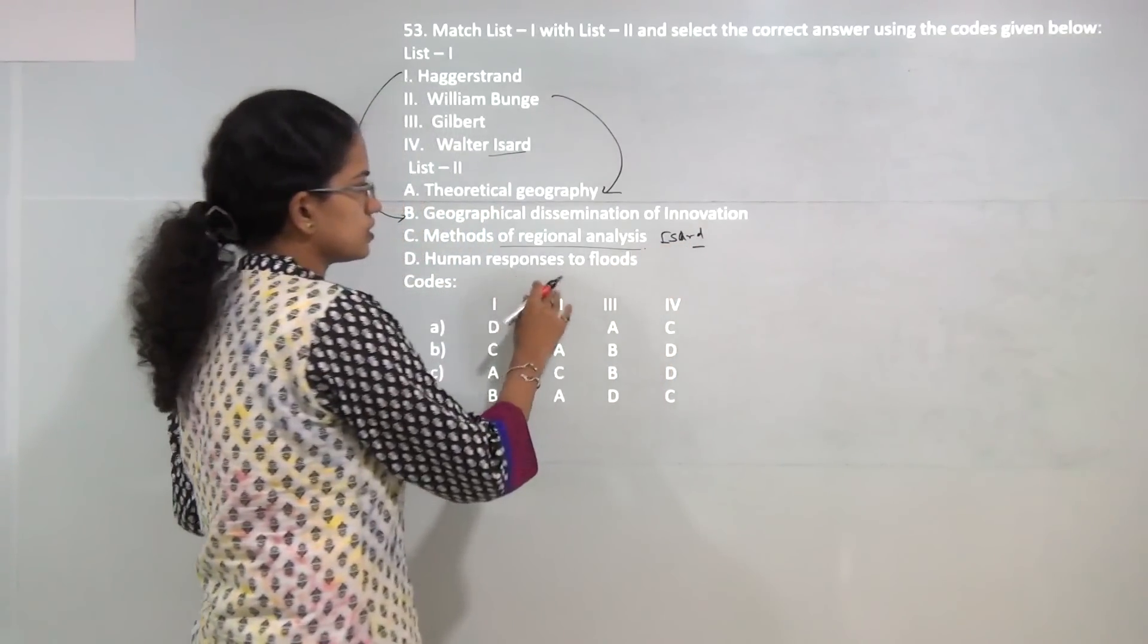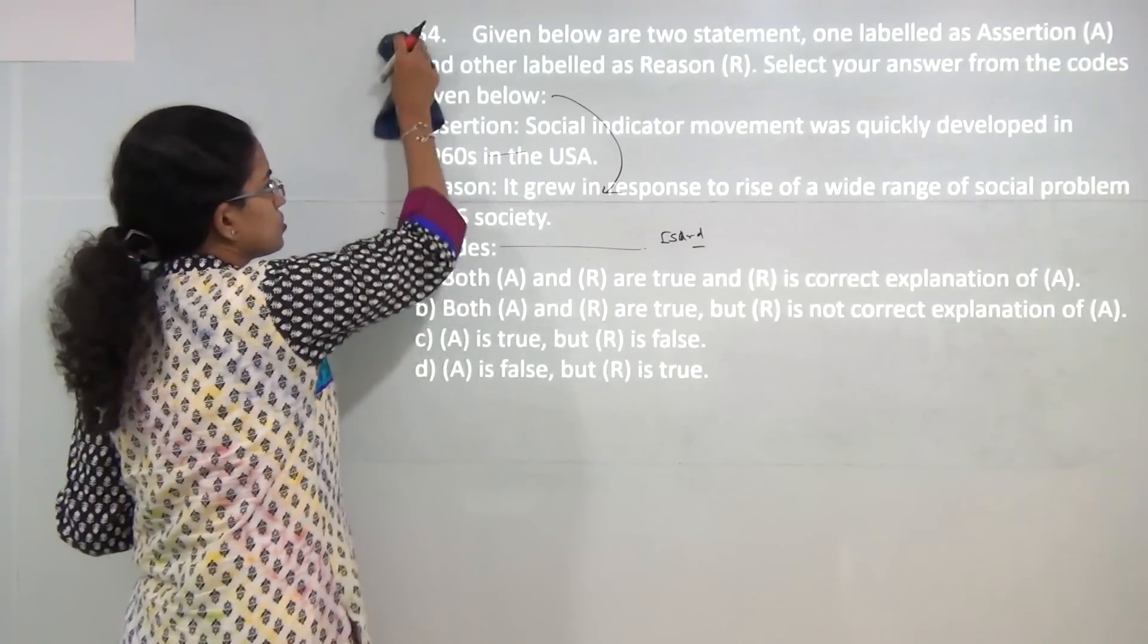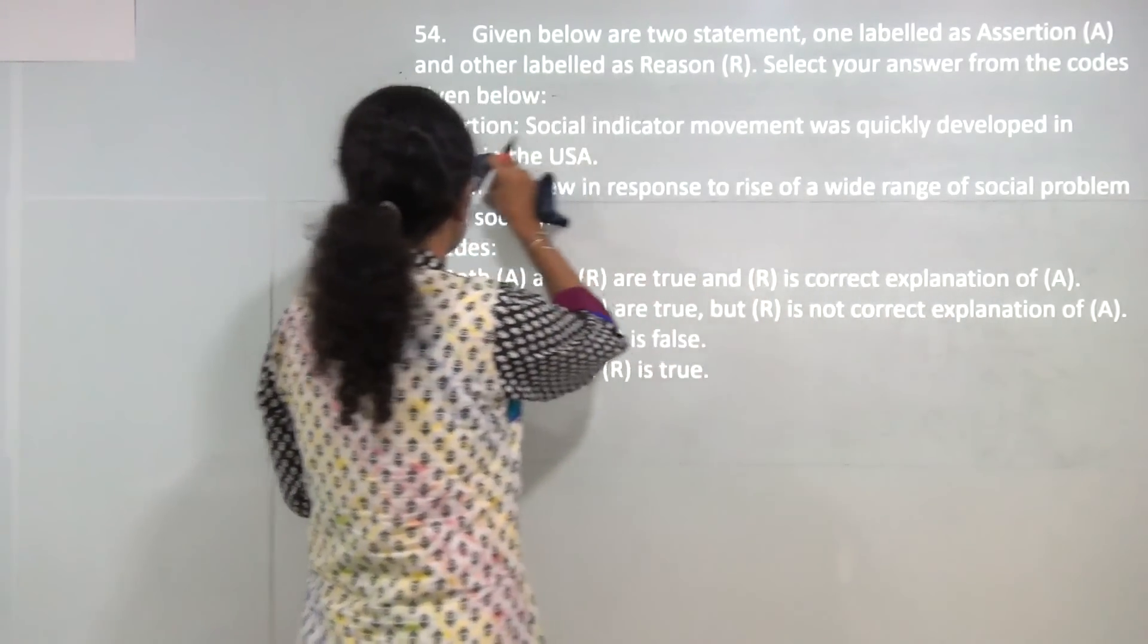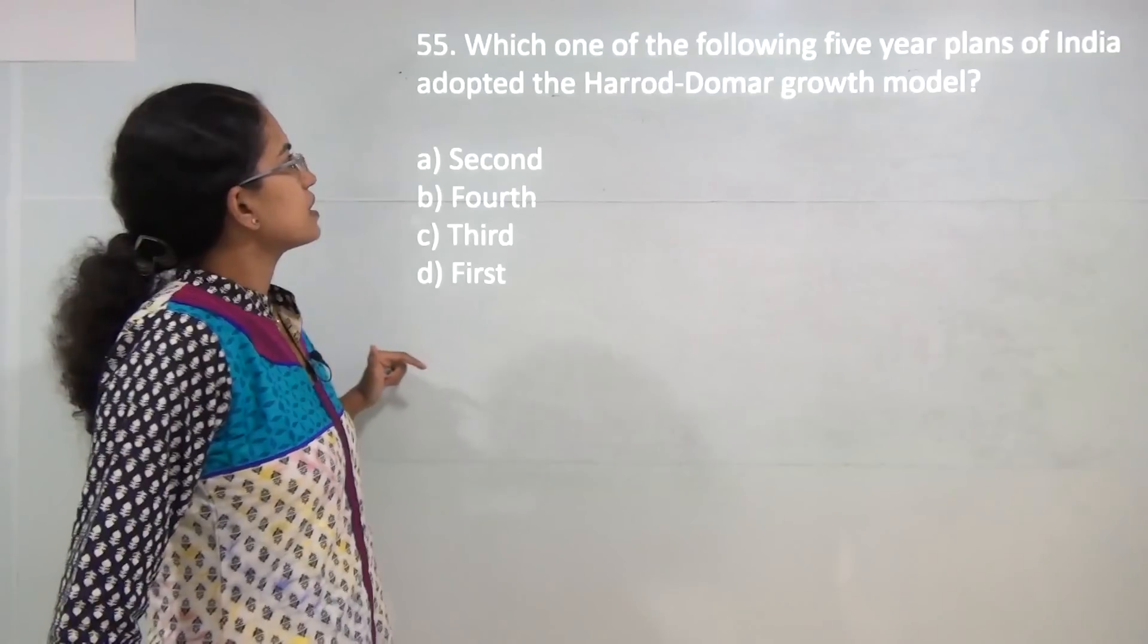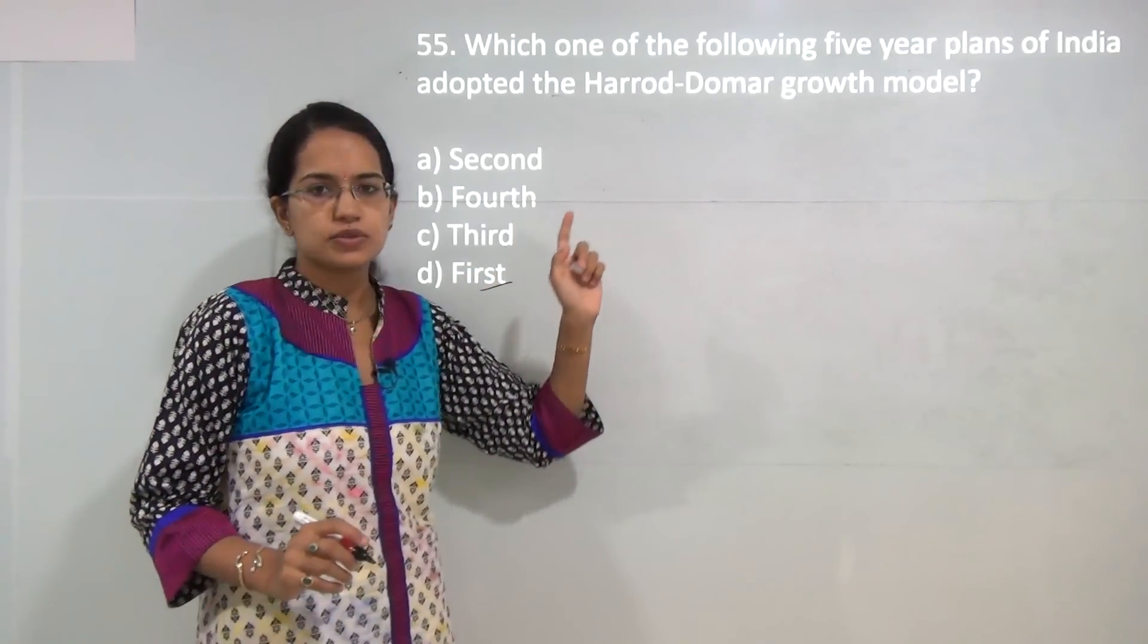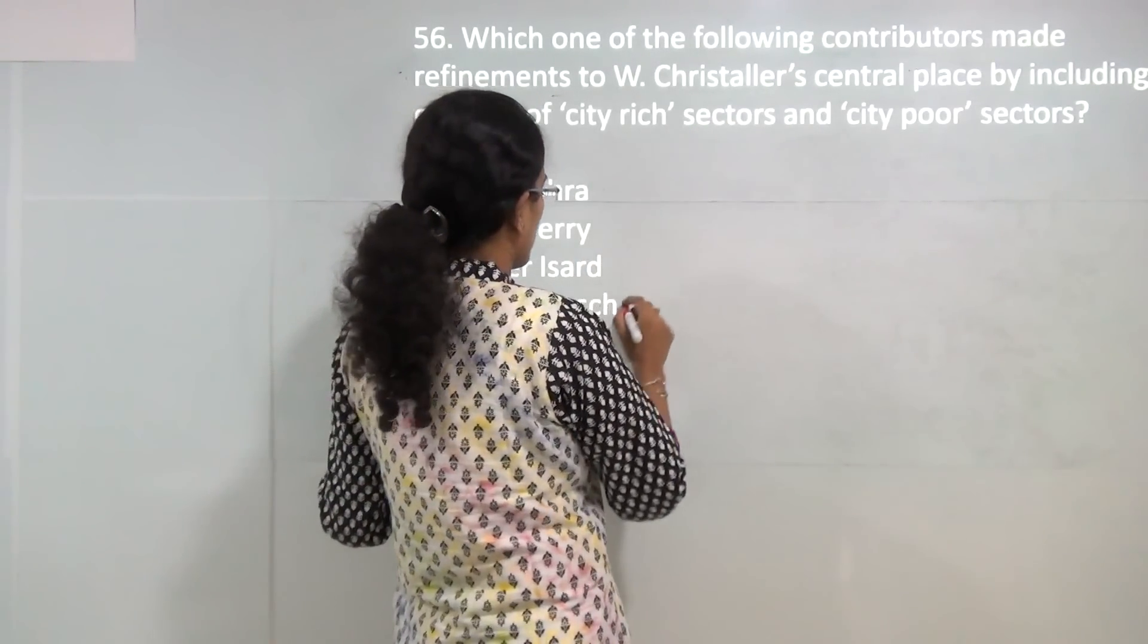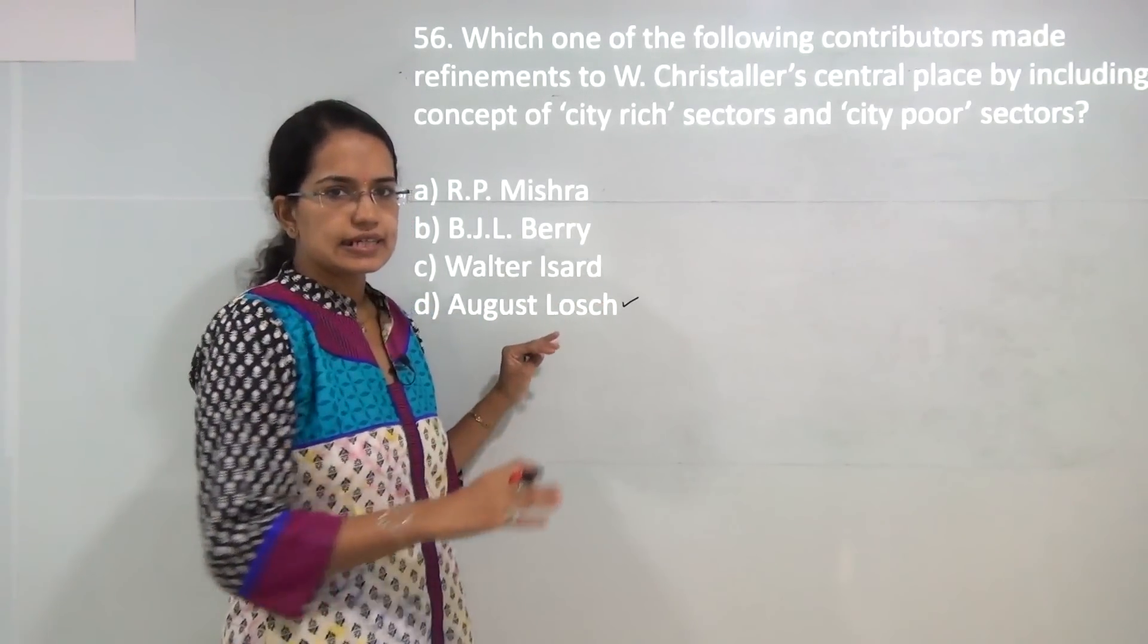Next question is assertion and reason. The social indicator movement was quickly developed in the United States in 1960 because it was in response to social problems in US society. Both assertion and reason are correct, and reason correctly explains the assertion. Next, which five-year plan adopted the Harrod-Domar growth model? The correct answer is first five-year plan. Next, the sectors of rich and poor were demarcated in Krytal's model by Losch.